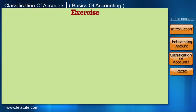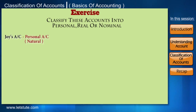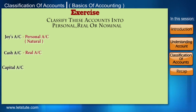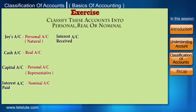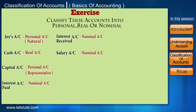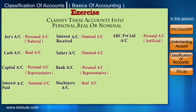Let's check our understanding with a quick exercise. Classify these accounts into personal, real, or nominal: Joy's account, cash account, capital account, interest paid account, interest received account, salary account, bank account, machinery account, ABC Private Limited account, and goodwill account.